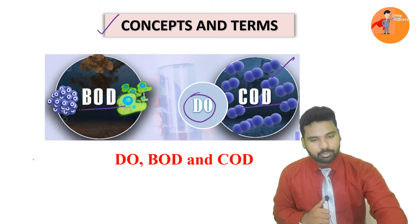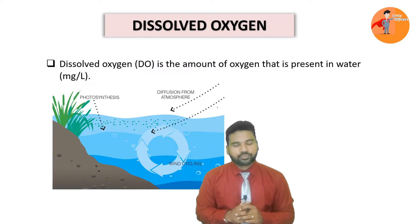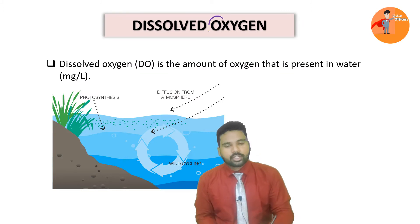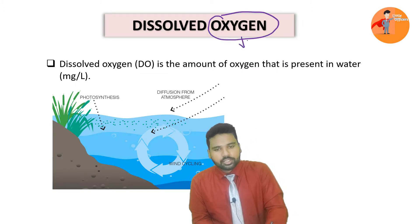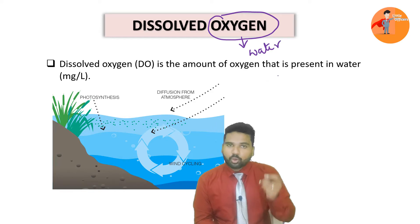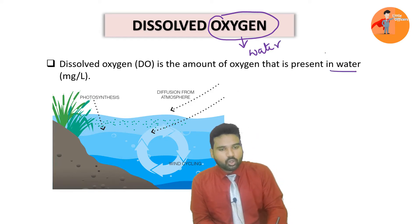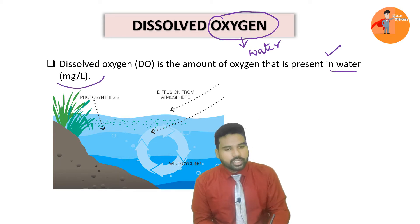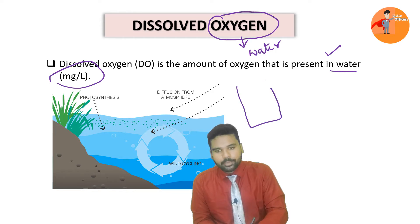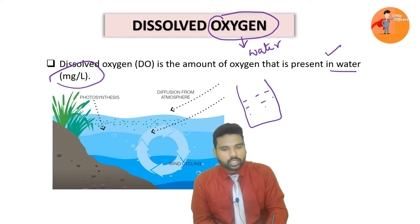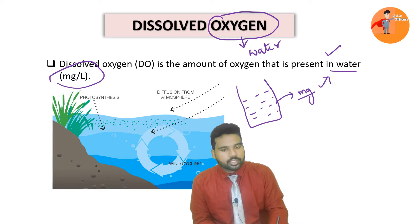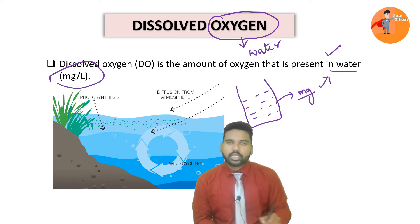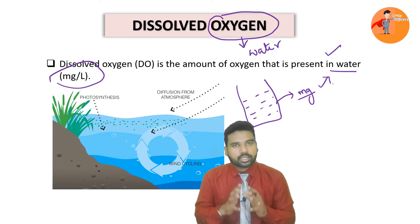Let us begin and understand about dissolved oxygen. What is dissolved oxygen? It simply means the oxygen which is dissolved in the water — the amount of oxygen which is present in the water. It is known as dissolved oxygen. Generally it is measured in milligrams per liter, meaning if you take one liter of water, how many milligrams of oxygen is present in it. That is what we call the dissolved oxygen content of that particular water.